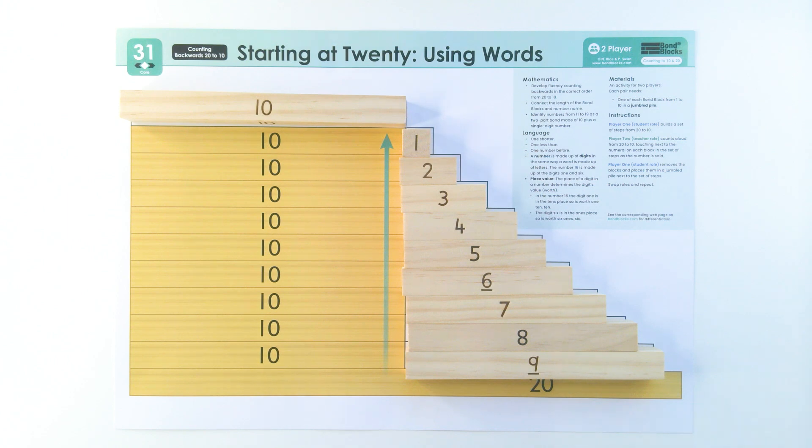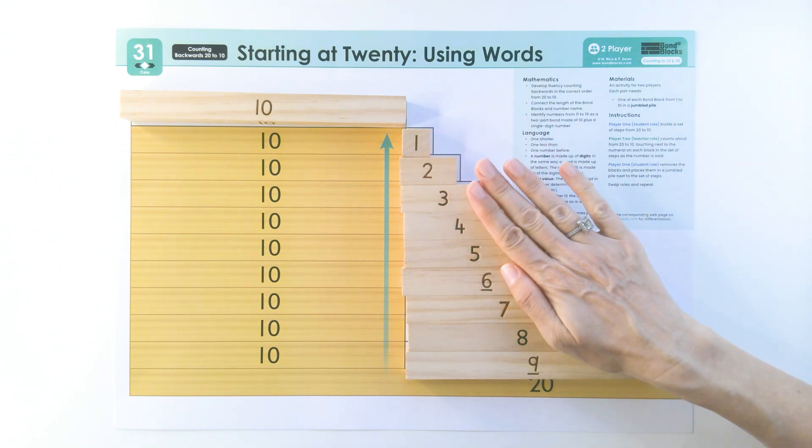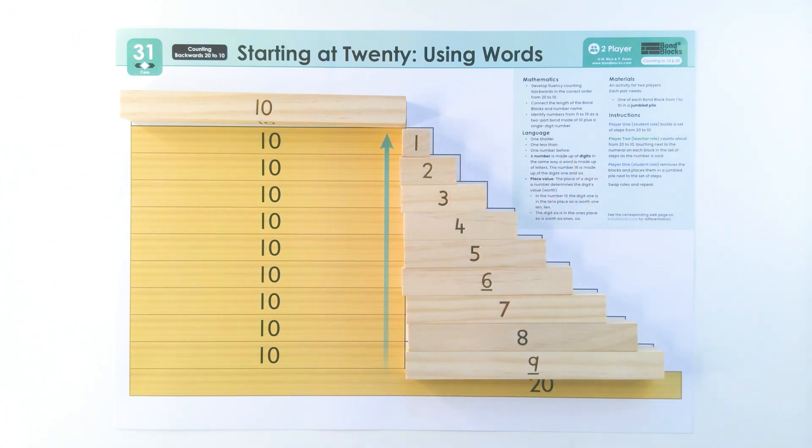Now once we've done them the next thing we have to do is check that none of our numbers are upside down. So let's just have a look and make sure that they're all up the right way. Yep, they are. Well done.